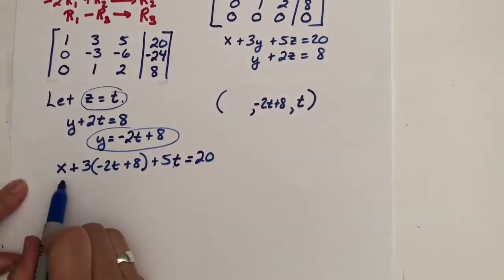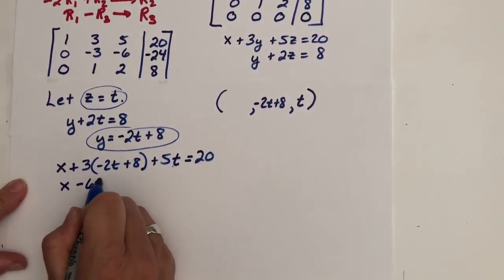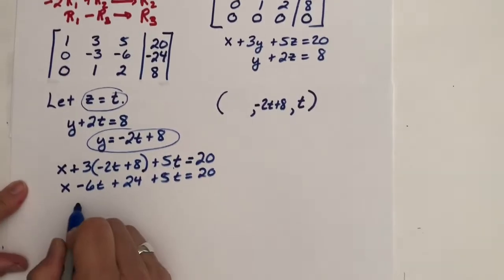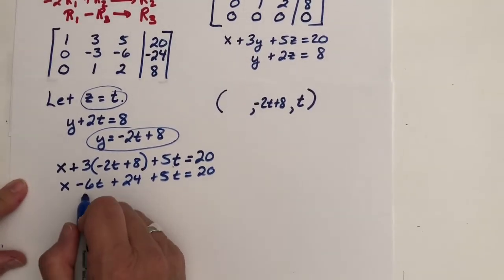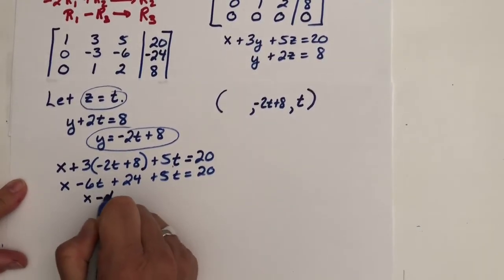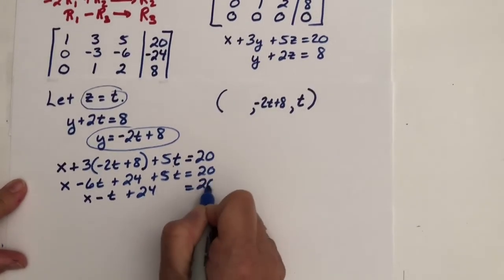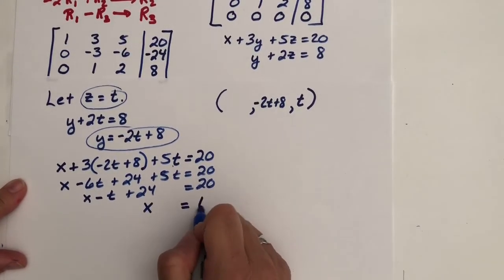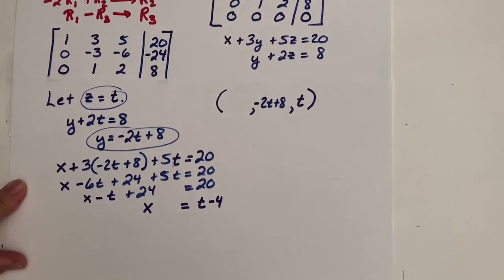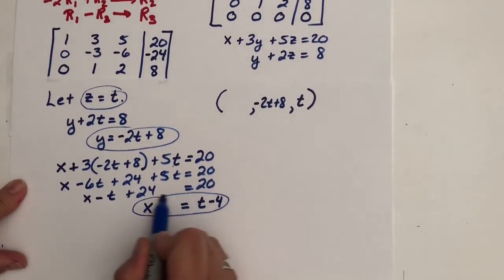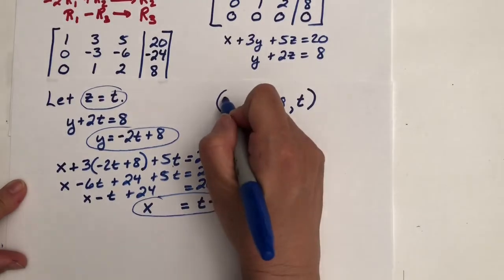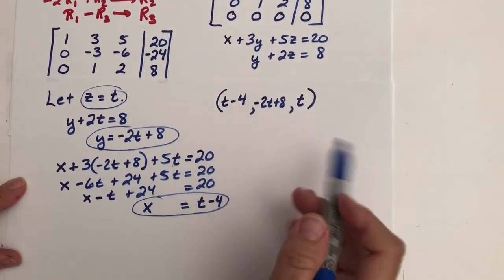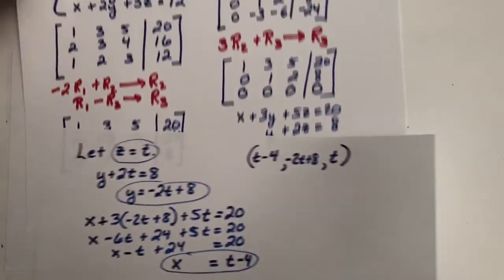We have x plus 3 times negative 2t plus 8 plus 5 times z, and z is equal to t, equals 20. And let's solve this equation for x. So we have x minus 6t plus 24 plus 5t equals 20. Let's keep solving. And we have x minus t plus 24 equals 20. And we'll add t and subtract 24. So we get x equals t minus 4. So here's our representation for x. It is t minus 4.